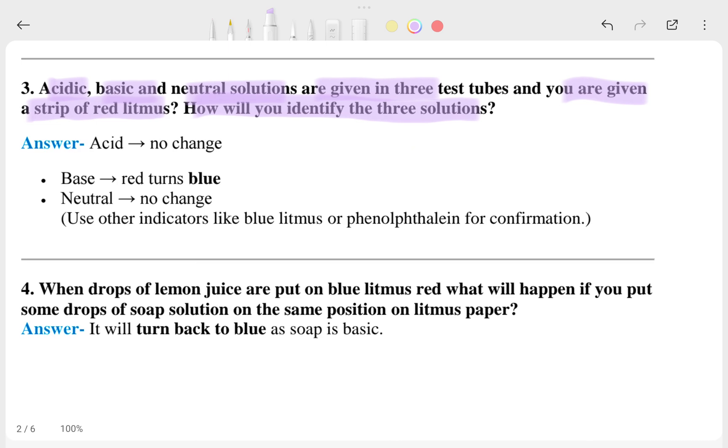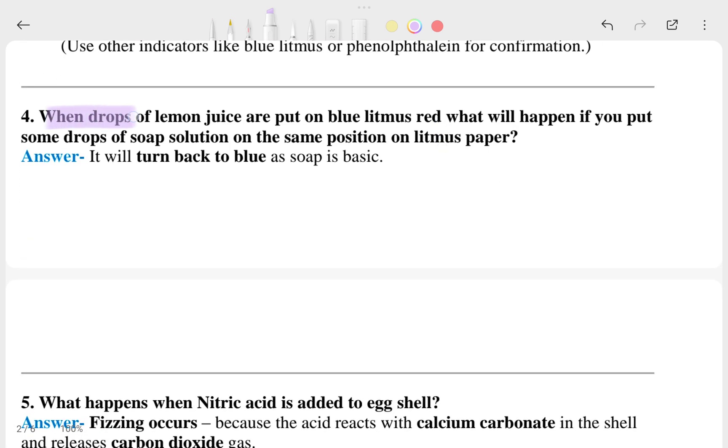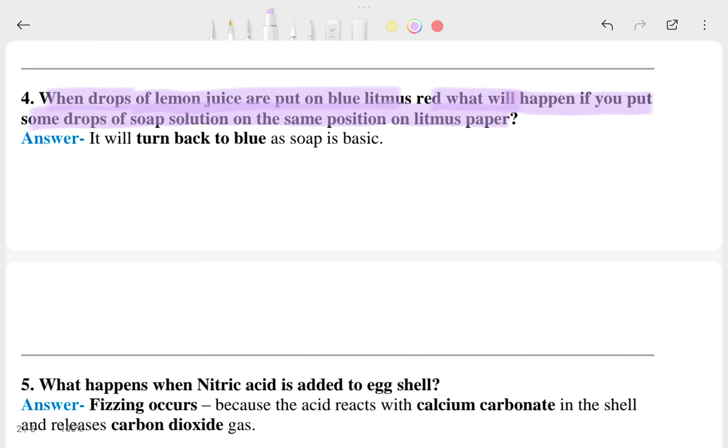Fourth question: when drops of lemon juice are put on blue litmus, what will happen if you put some drops of soap solution on the same position on litmus paper? The answer: it will turn back to blue because soap is basic.